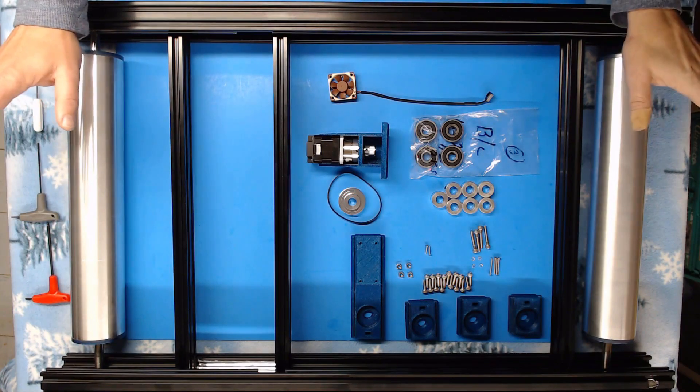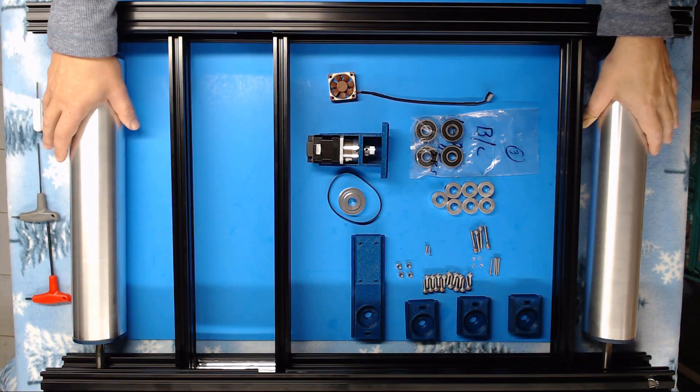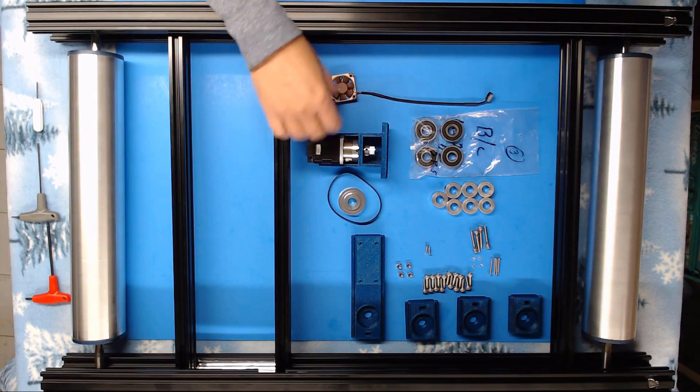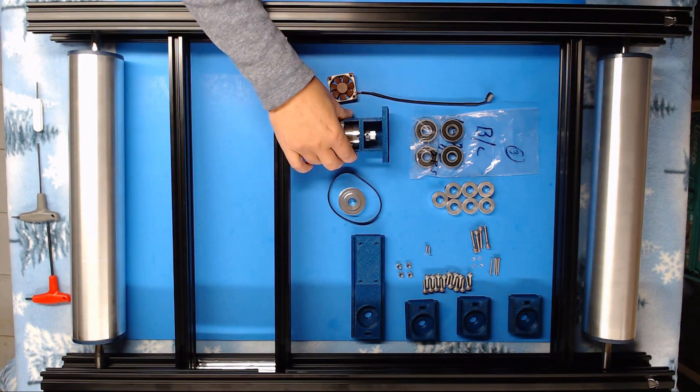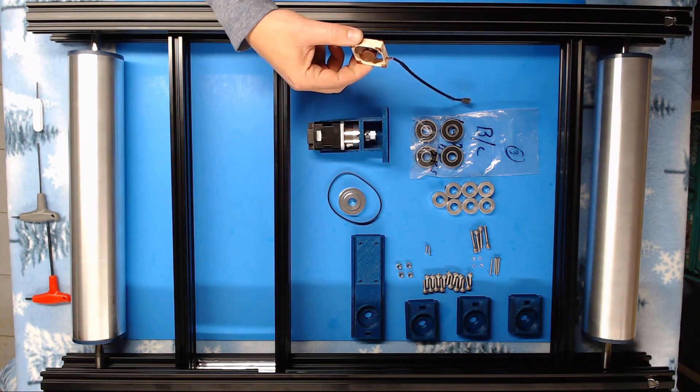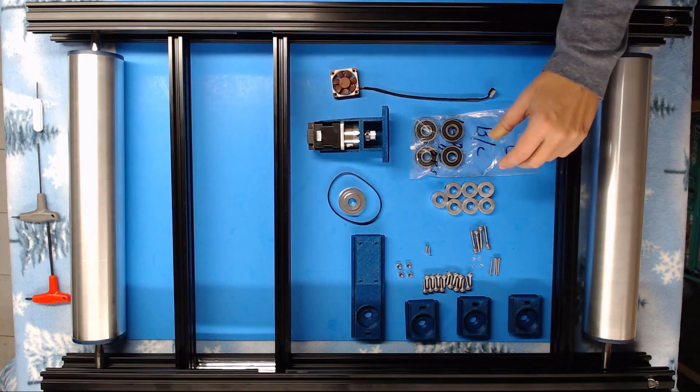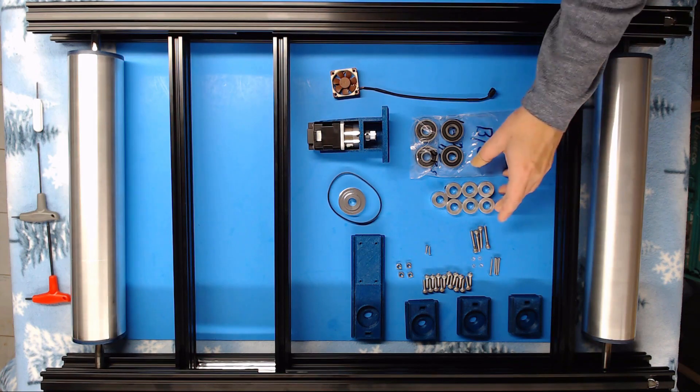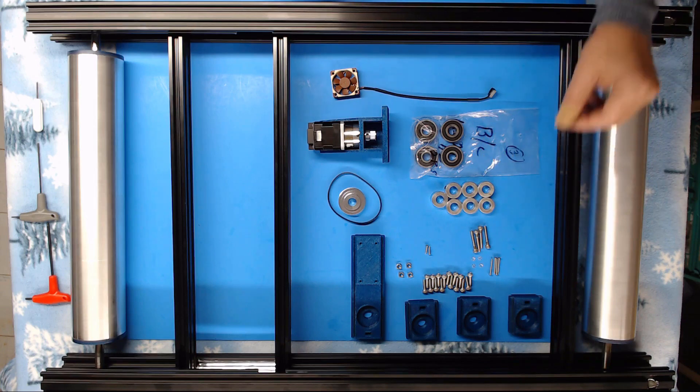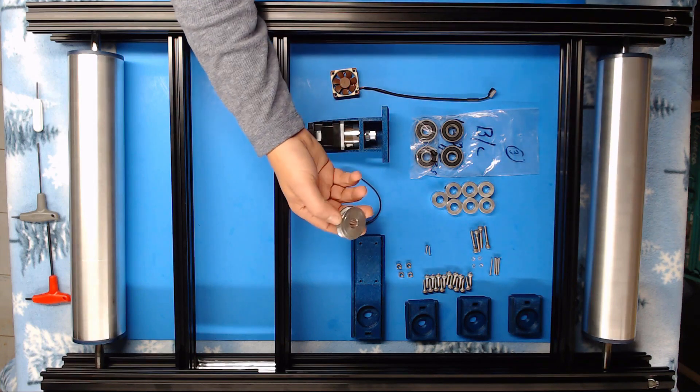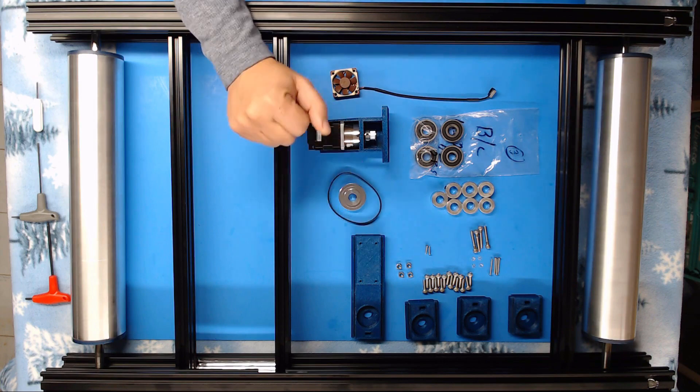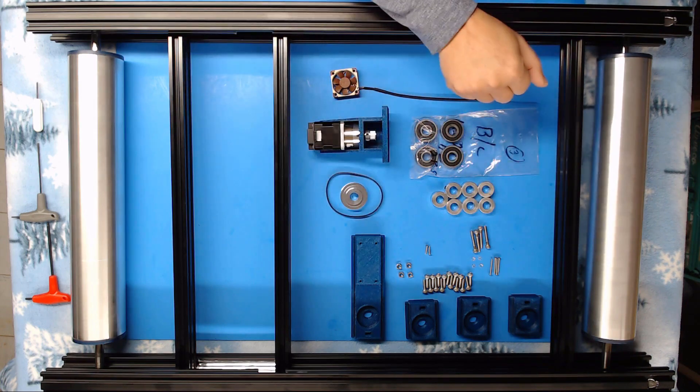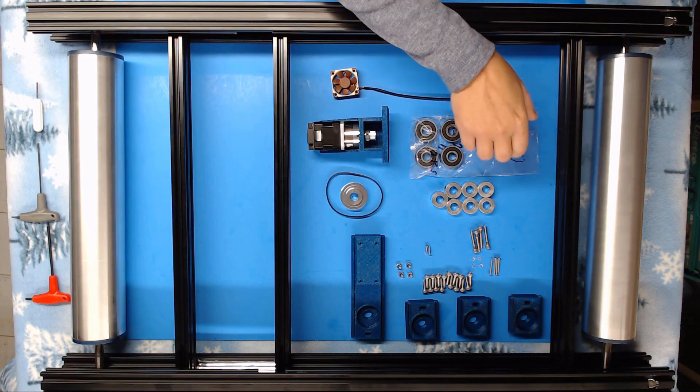In this segment we're going to install our two rollers. For this segment you will need your rollers, your framework, your stepper motor to run your rollers, a 40 millimeter Noctua fan, four 6202 2RS bearings, seven half inch shaft collars, a half inch 60 tooth pulley, the timing belt, four metric five by 30 millimeter bolts,